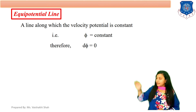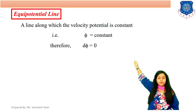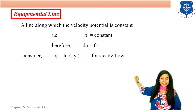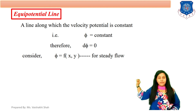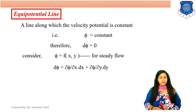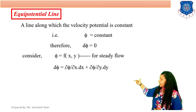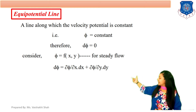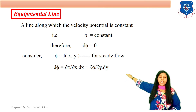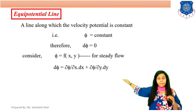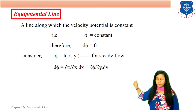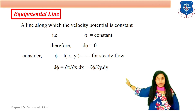If phi is a function of x and y, then by applying the chain rule: d phi equals del phi by del x into dx plus del phi by del y into dy. We studied this chain rule in mathematics. So d phi equals del phi by del x into dx plus del phi by del y into dy.